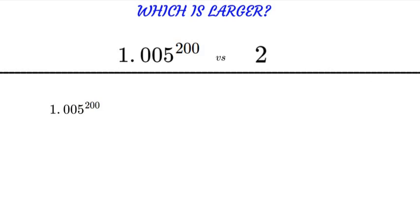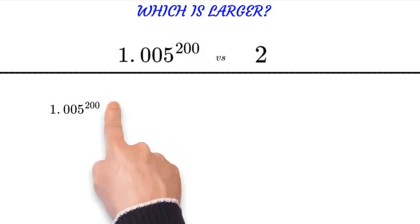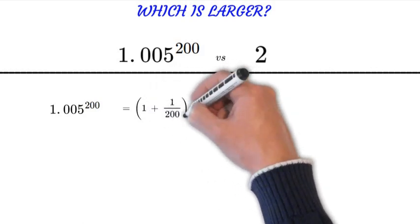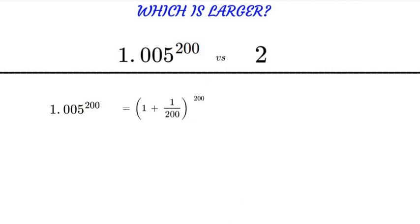So let's rewrite it out like that. So 1 plus 1 over 200 to the 200th power, and that is equal to the same thing as 1.005 to the 200th power.